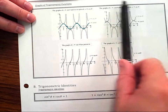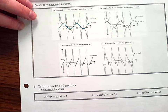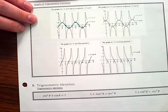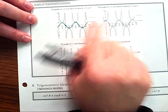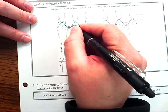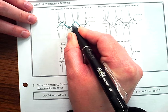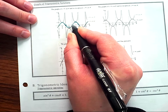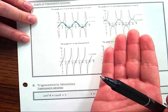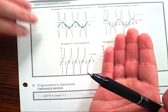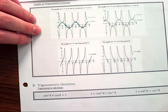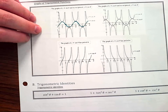These are the graphs of all six trig functions. If you know sine and cosine, you can derive the rest: cosecant is 1 over sine, so where sine is 0, cosecant is 1 over 0, which is undefined — that's why we have a vertical asymptote. Same thing with secant and cosine.